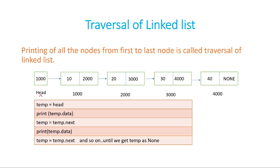Now the next thing is traversal. Traversal means going through all the nodes from the first node to the last node of the linked list. We are going to print all the nodes one by one. Focusing on the very first line: temp = head, so temp is now holding 1000. If you print temp.data, it will print the data stored at address 1000, which is 10. In the next line, temp = temp.next — what is in temp.next? temp is currently 1000, and that node has 2000 in its next field.